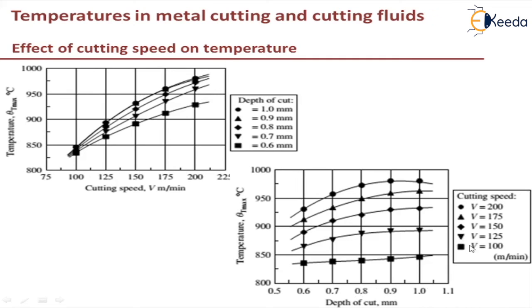Next, you can see the second graph where depth of cut is varied and plotted against cutting speed. As depth of cut increases, the maximum temperature also increases. The cutting speed is varied from 100 m/min to 200 m/min, and as cutting speed increases, maximum temperature also increases. Both graphs are plotted under the same conditions. This concludes the effect of cutting speed on the temperature generated between the tool and the workpiece.